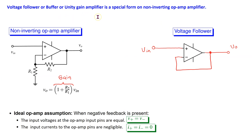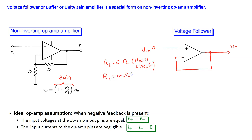The voltage follower is a special form of the conventional non-inverting op-amp amplifier. The gain of this circuit is 1 plus R2 over R1. If we set R2 equal to 0 ohms — that is, a short circuit — and we set R1 equal to infinity ohms — that is, an open circuit — then the gain of the circuit becomes 1 plus 0 over infinity, which equals 1, and the circuit becomes the voltage follower circuit.